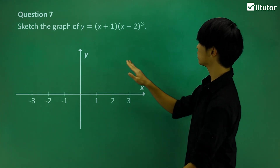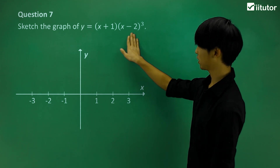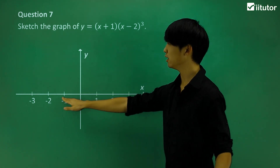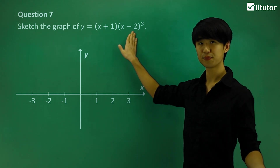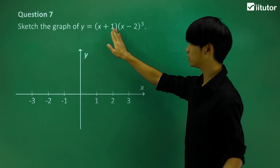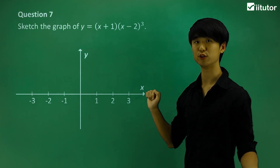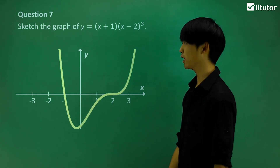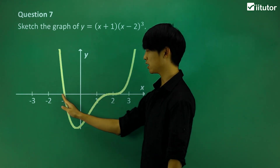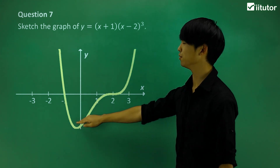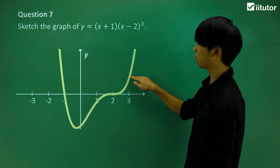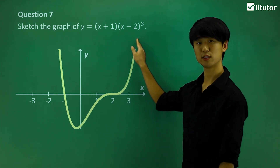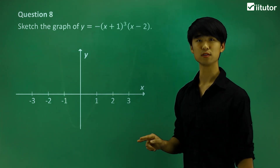Looking at question 7, we start looking at triple roots. There's a single root at x equals negative 1, and a triple root at x equals 2. It's a positive graph. A single root means the curve cuts through the x-axis, while a triple root looks like a cubic graph at that point — so the triple root at x equals 2 behaves like a cubic inflection.